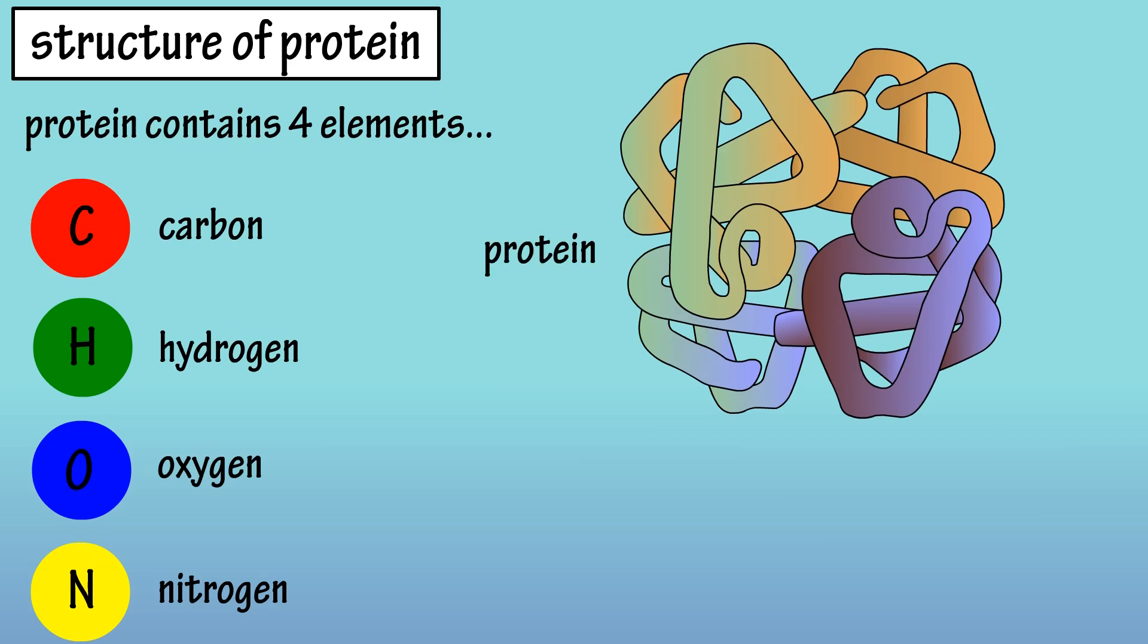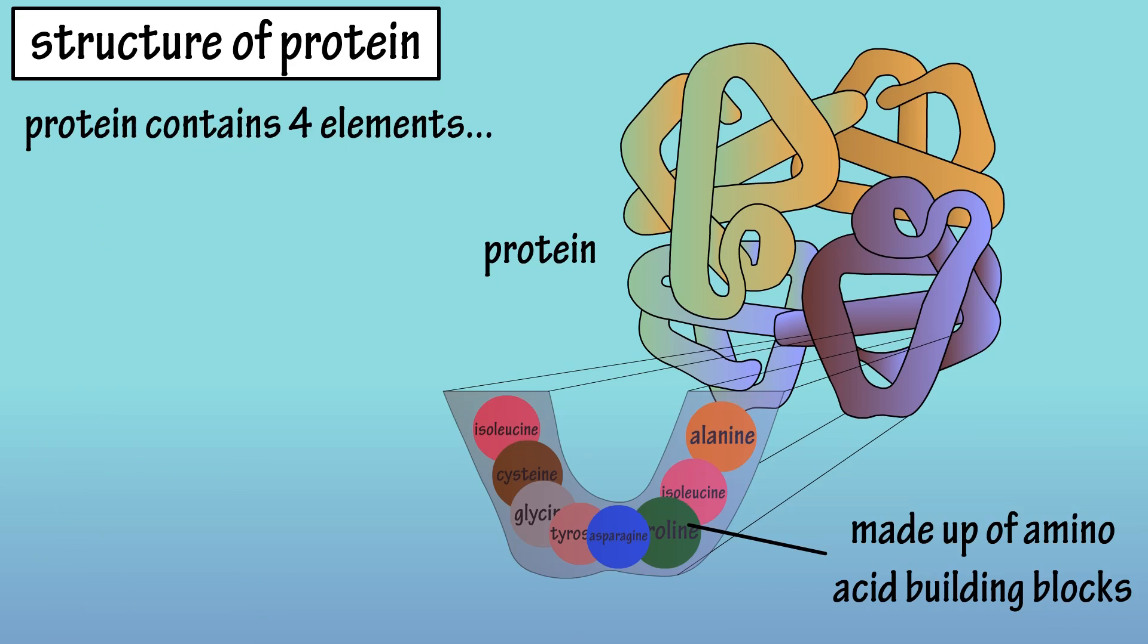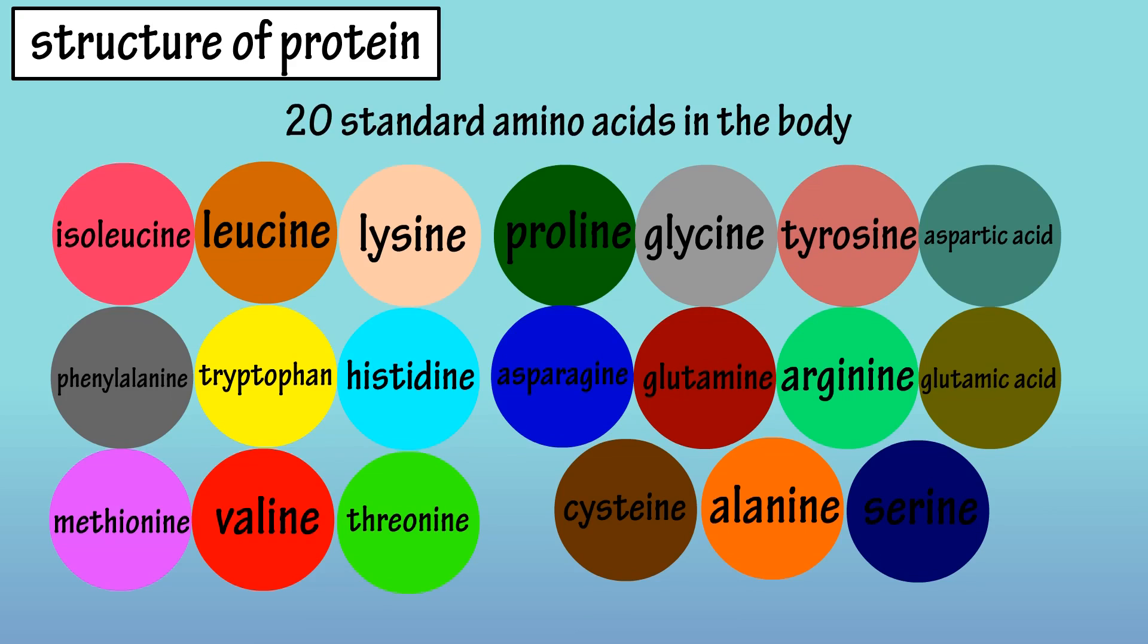Proteins are giant macromolecules that are made up of amino acid building blocks. Amino acids can link together to form long chains, and typically a protein consists of 100 or more amino acids linked together.